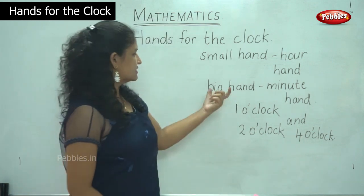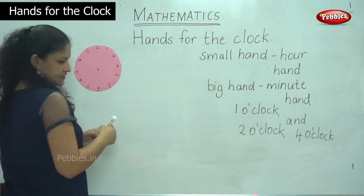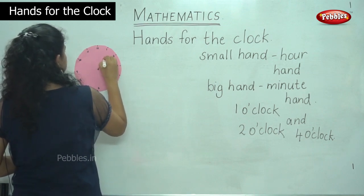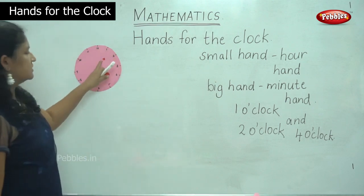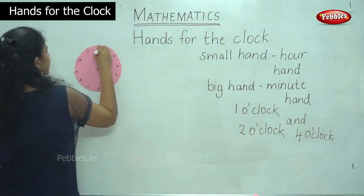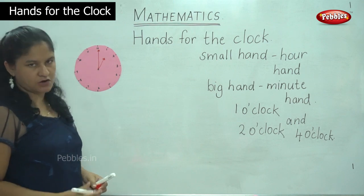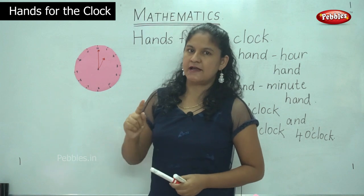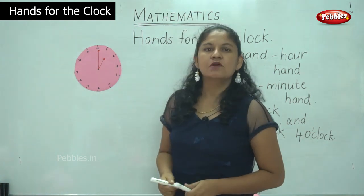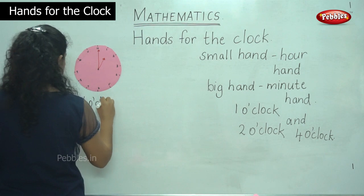So when it is 1 o'clock, the small hand or the hour hand points towards number 1. The small hand points towards 1 and the big hand, that is the minute hand, points towards number 12. So then we read the time as 1 o'clock.